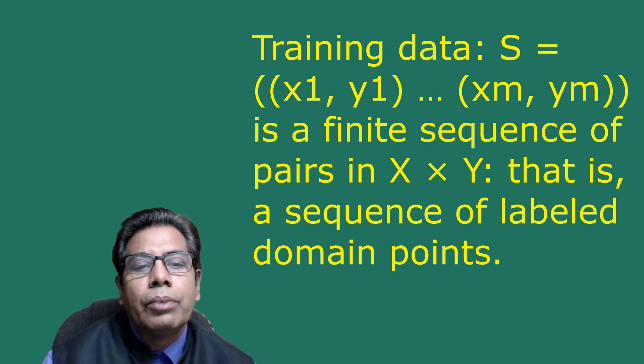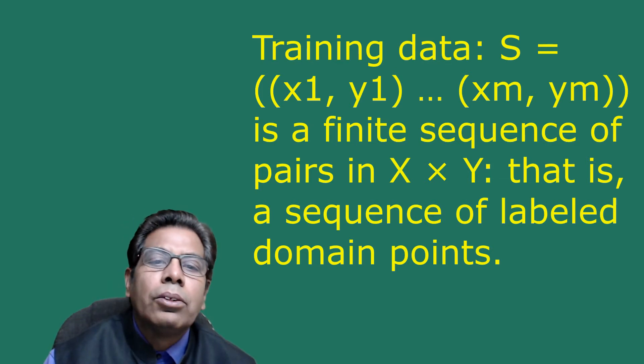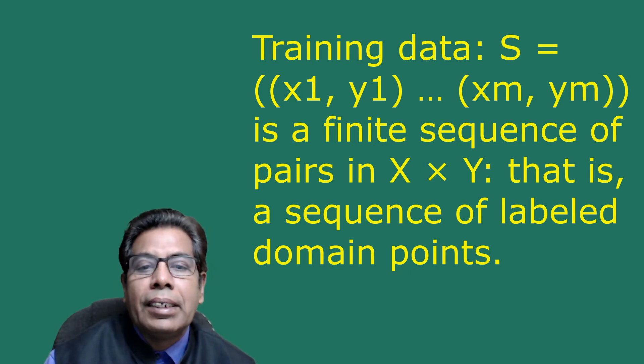For our papayas example, let Y be {0, 1} where 1 represents being tasty and 0 stands for not being tasty. The training data is defined as S = {(x₁, y₁), ..., (xₘ, yₘ)}, a finite sequence of pairs in X × Y — that is, a sequence of labeled domain points. This is what we call the training data, and it is the input the learner has access to.